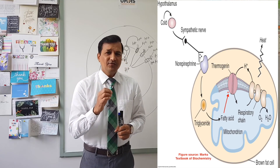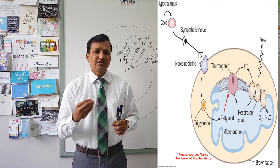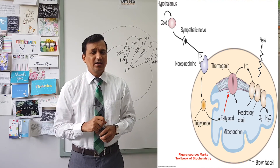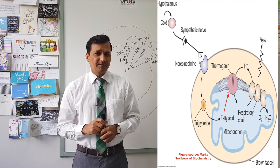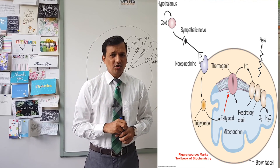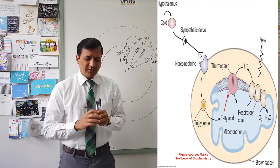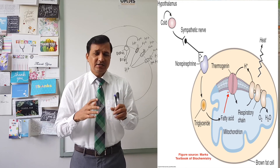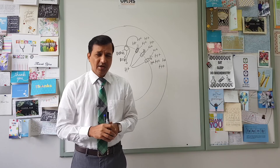These free fatty acids will go and activate a protein in the inner mitochondrial membrane called thermogenin. Thermogenin is also called uncoupling protein. UCP1, or uncoupling protein 1, is richly present in brown adipose tissue.